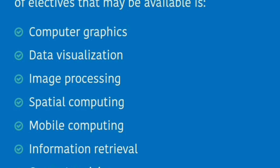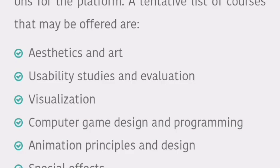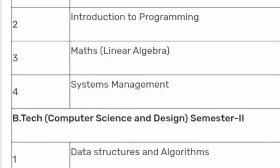From the course perspective, it provides a lot of computer science electives and design electives. CS electives include computer graphics, data visualization, image processing, spatial computing, mobile computing, GPU computing, machine learning, software engineering, and multimedia technologies. Design and media electives include aesthetics and art, usability studies, visualization, spatial effects, photography, video editing, sound engineering, and computer game design and programming.